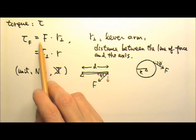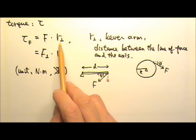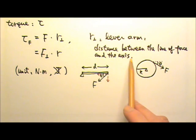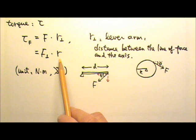For torque, we learned how to find the torque produced by a certain force. It is the force times the lever arm, where the lever arm is the distance between the line of force and the axis. Or we can use the perpendicular component of the force times the R.